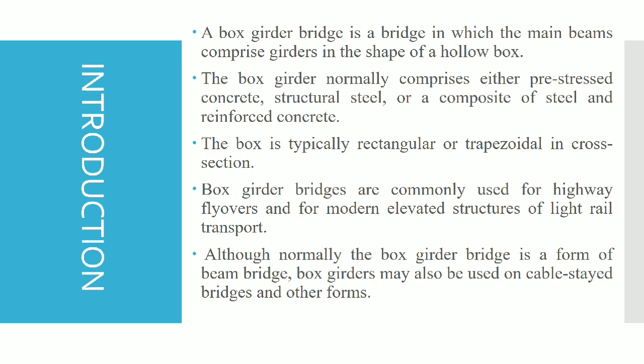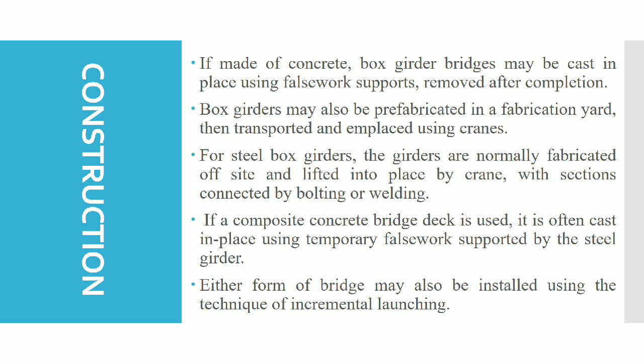The box girder bridge is a bridge in which the main beams comprise girders in the shape of a hollow box. The box is typically rectangular or trapezoidal in cross section. This box girder bridge is in the form of a beam bridge. In construction, it is prefabricated off-site and lifted into place by using cranes.